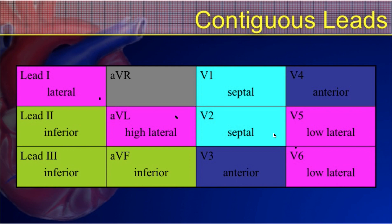Leads 2, 3, and AVF all look at the inferior wall, or the bottom of the heart, which typically is mostly the right ventricle because of the way the heart sits in the chest. Their camera angle is looking up from your feet, basically looking directly at the bottom of that heart.